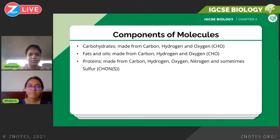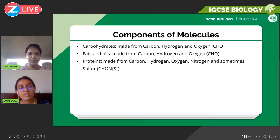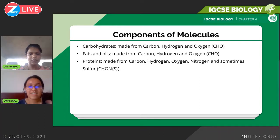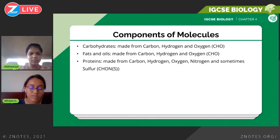To begin with, we have the components of biological molecules. Carbohydrates are made up of carbon (C), hydrogen (H), and oxygen (O). Fats and oils have the same compositional elements as carbohydrates — carbon, hydrogen, and oxygen.